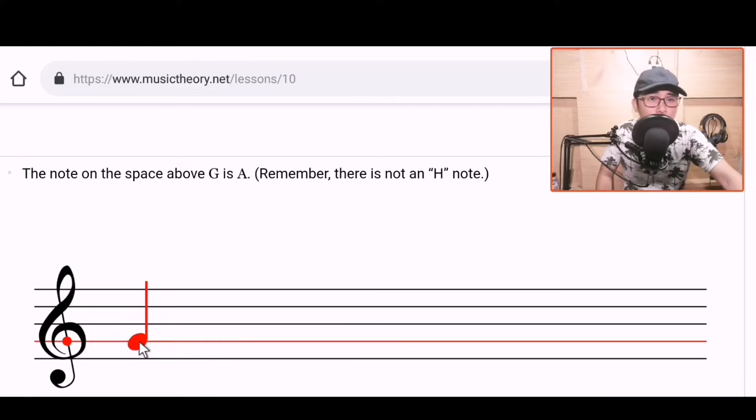After the line comes the space. After the space comes the line. That's how it should be. Not line then line again. Not like that. Line to space. So G. This red line is G. And then the space above, this space here that I'm pointing to with the cursor, is A. Okay? We don't have H, it's A.